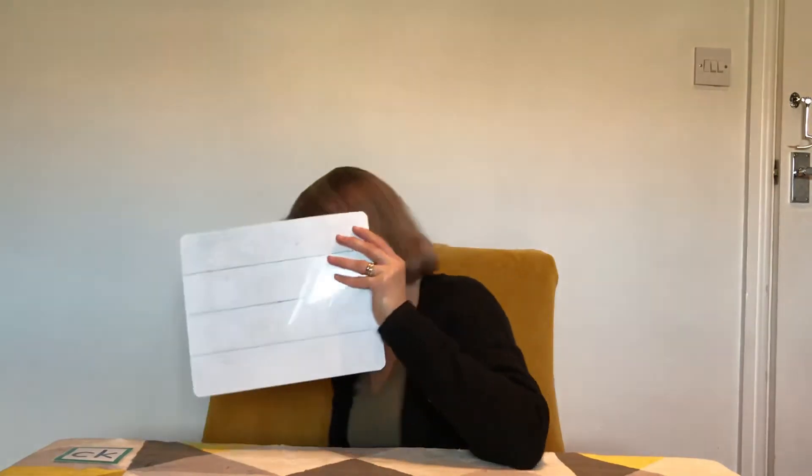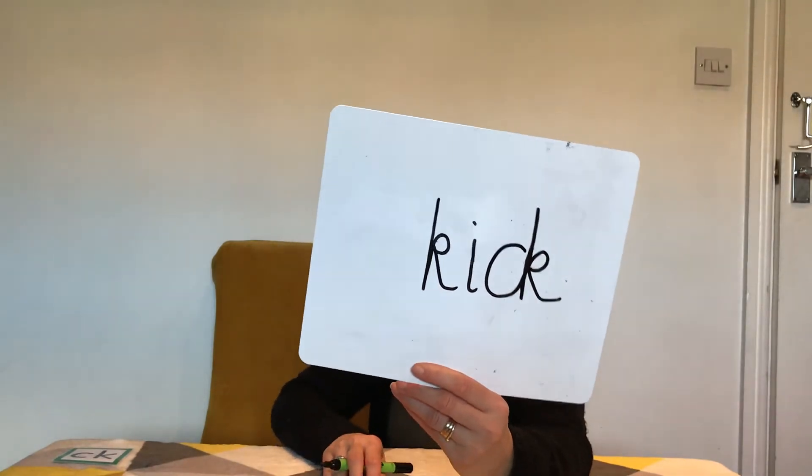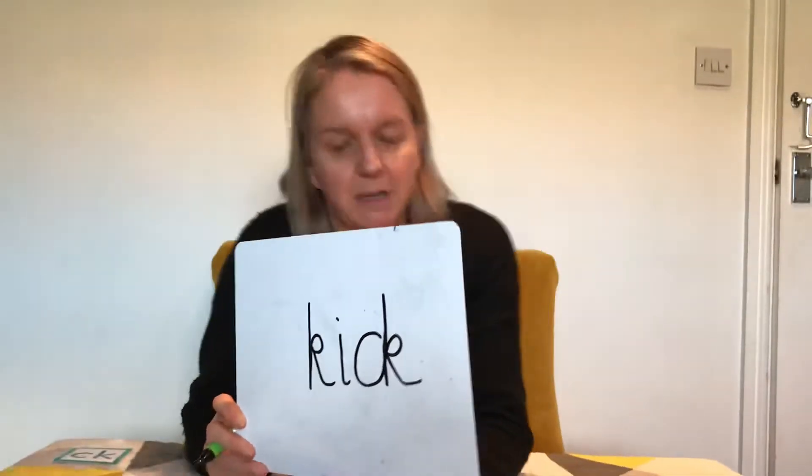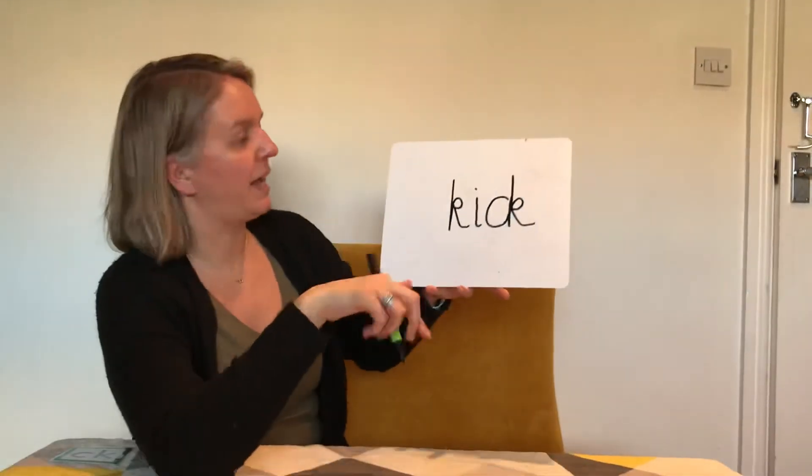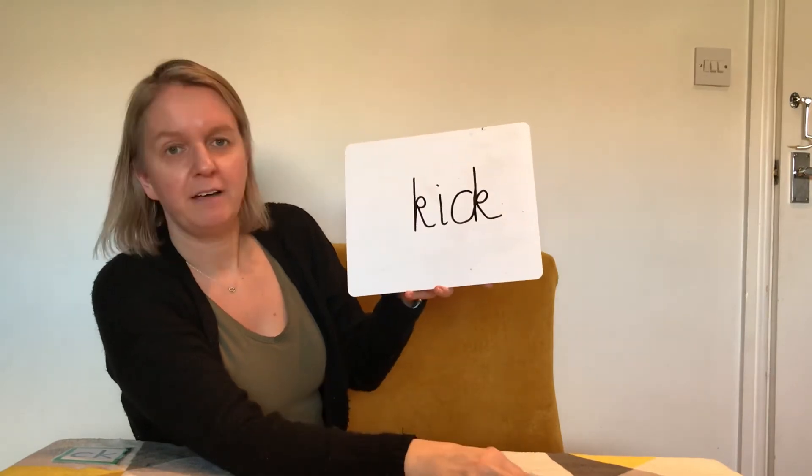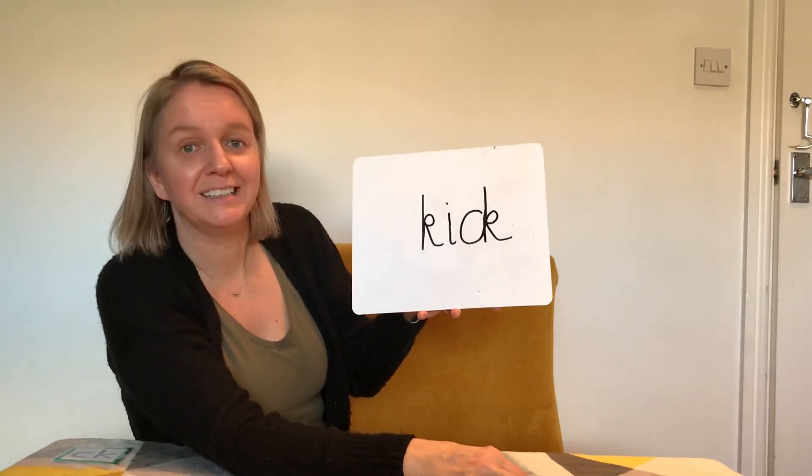Yesterday we had a go at writing that grapheme, so we're going to have another go today — first at reading it in words, and then at the end we will write our own words. The first word we're going to read — I'll write it on my board and then we can segment and blend to read it. We're going to add our phoneme buttons like we usually do. I'm going to use a join for my 'ck' at the end. Here is the word I want us to read today — let me spin around so you can see really clearly.